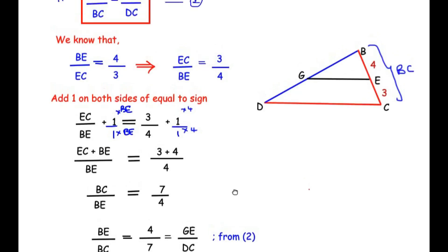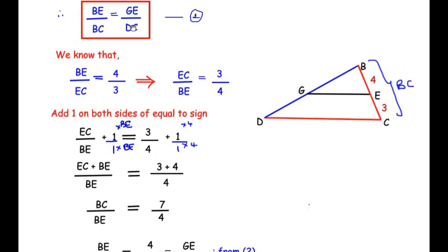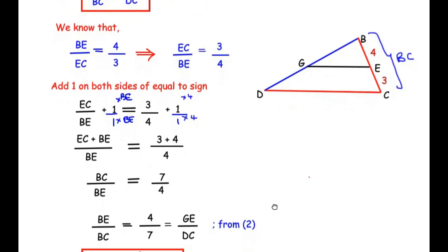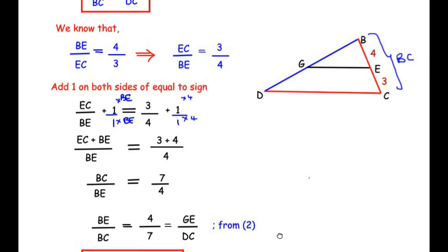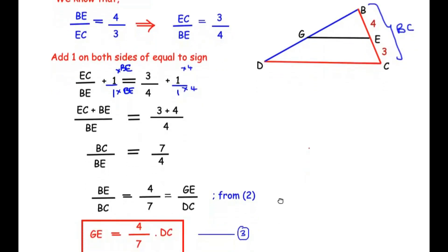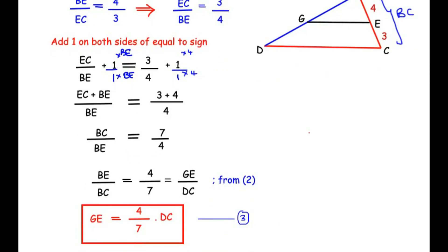From equation 2, BE over BC equals GE over DC, so GE over DC also equals 4 over 7. Therefore GE equals 4 over 7 times DC. Let this be equation 3.